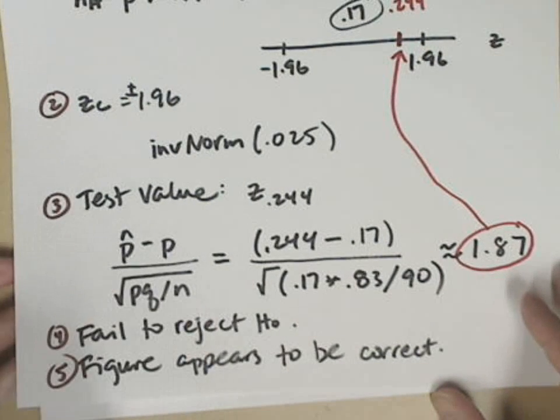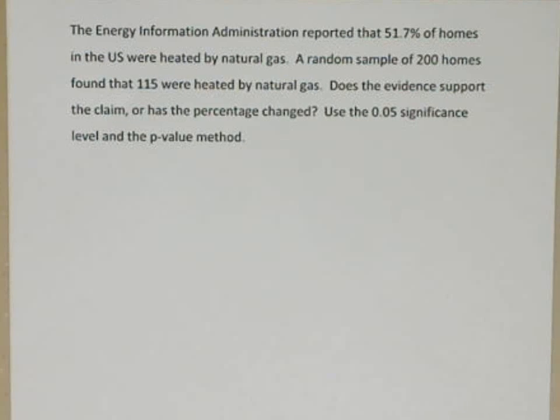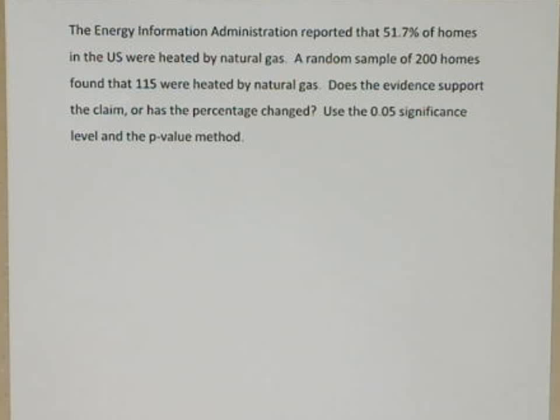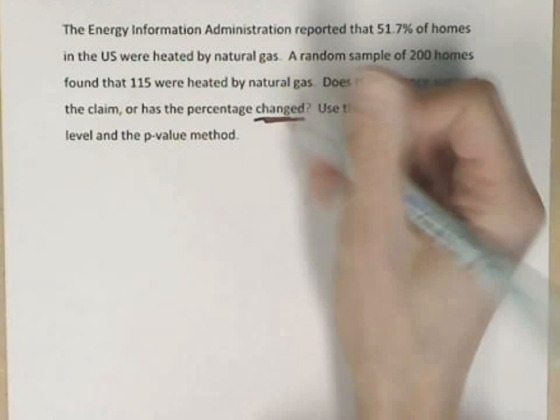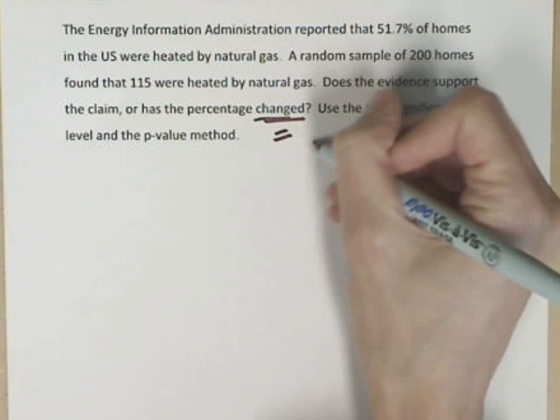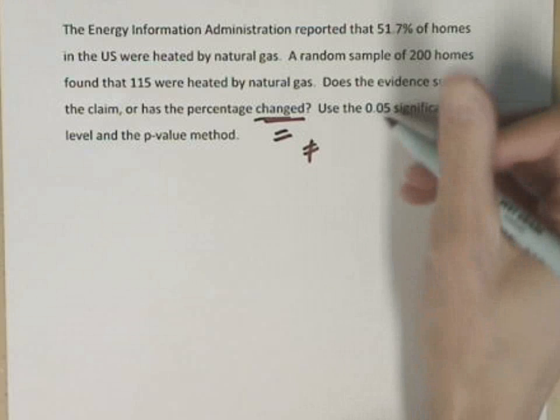I've got one more example here. The Energy Information Administration reported that 51.7% of homes in the U.S. were heated by natural gas. A random sample of 200 found that 115 were heated by natural gas. Does the evidence support the claim, or has the percentage changed? Notice that word changed. It doesn't say increased or decreased, just changed. So I'm expecting equals and not equals for my hypotheses.